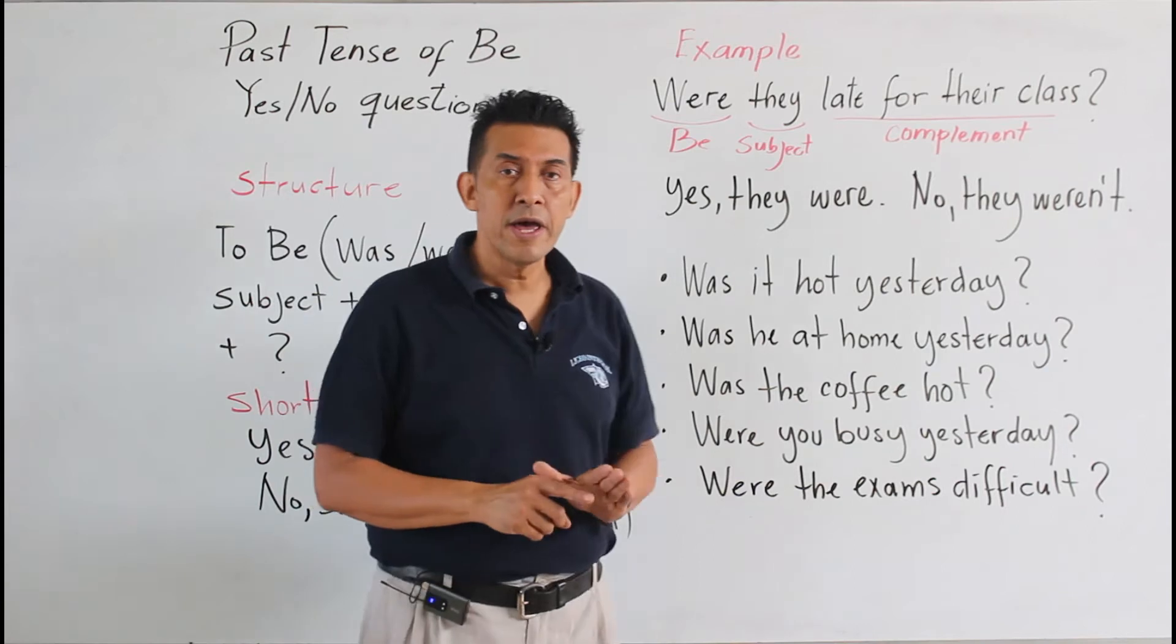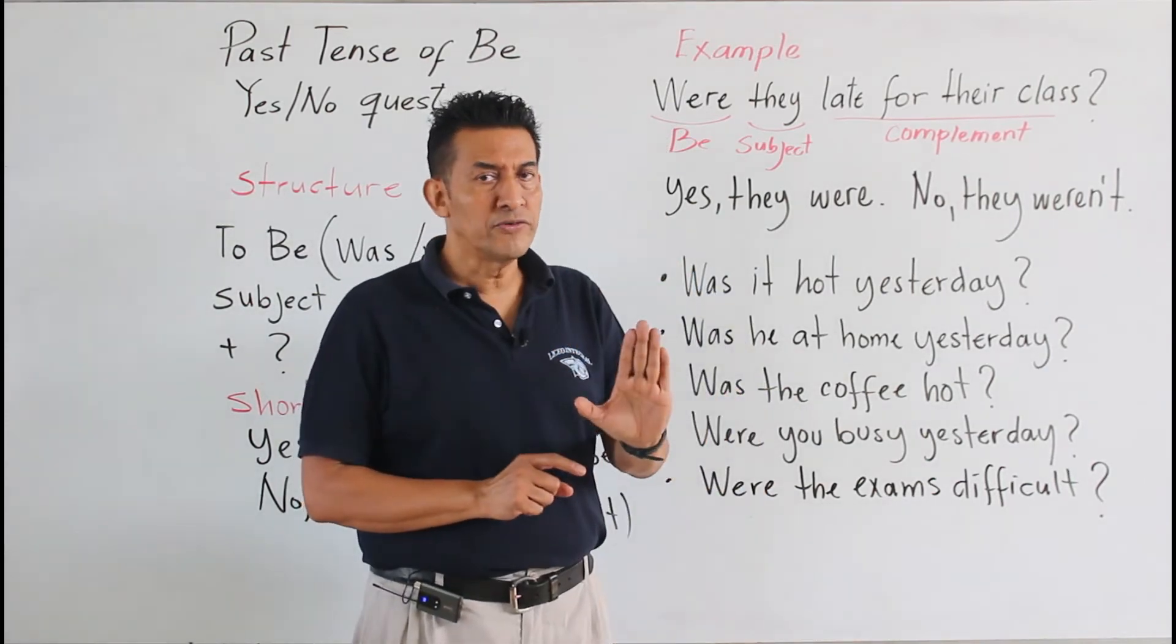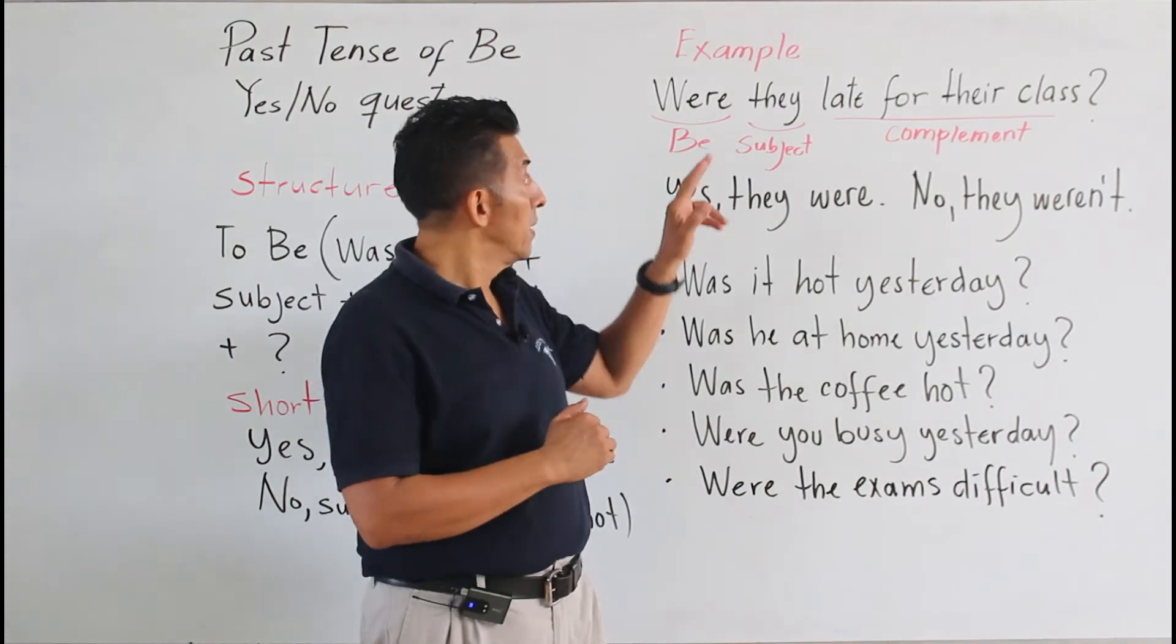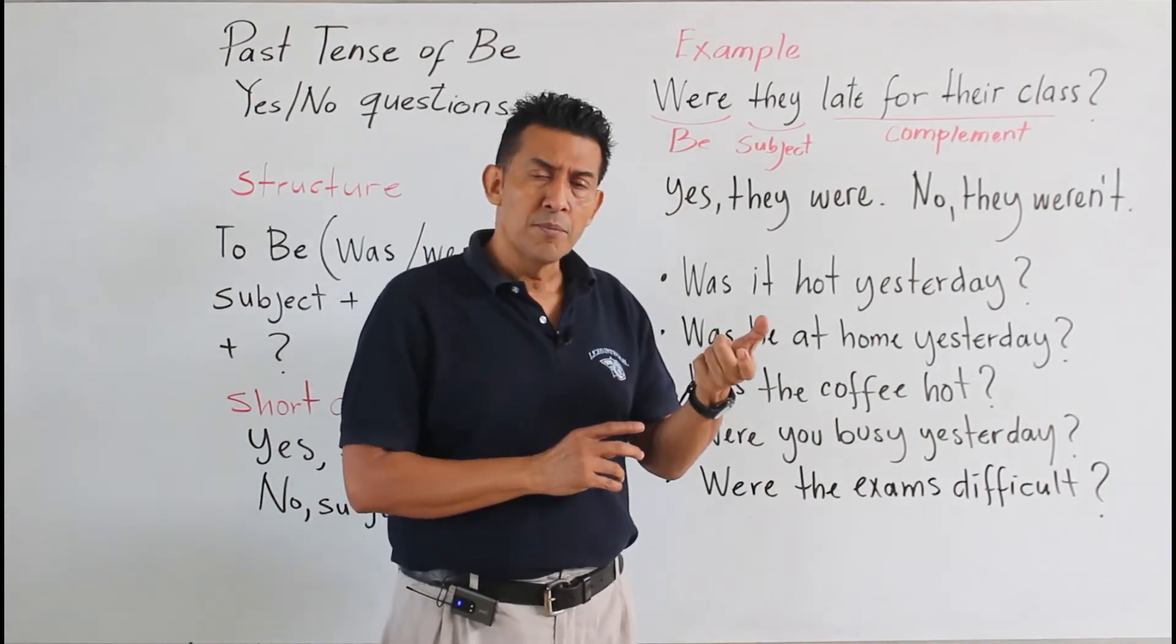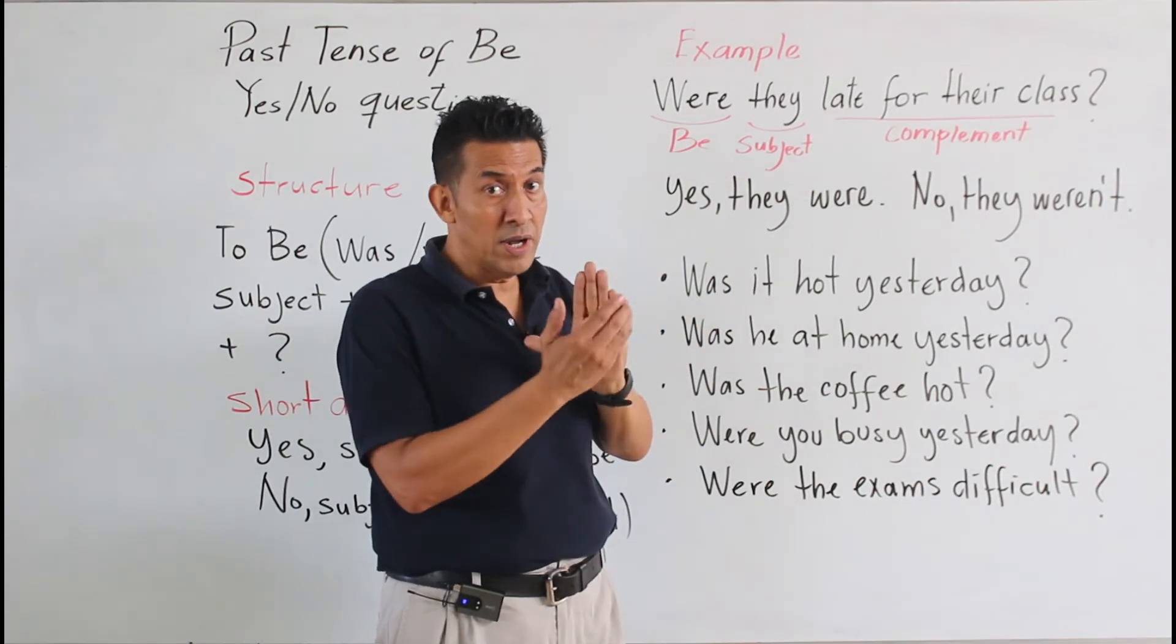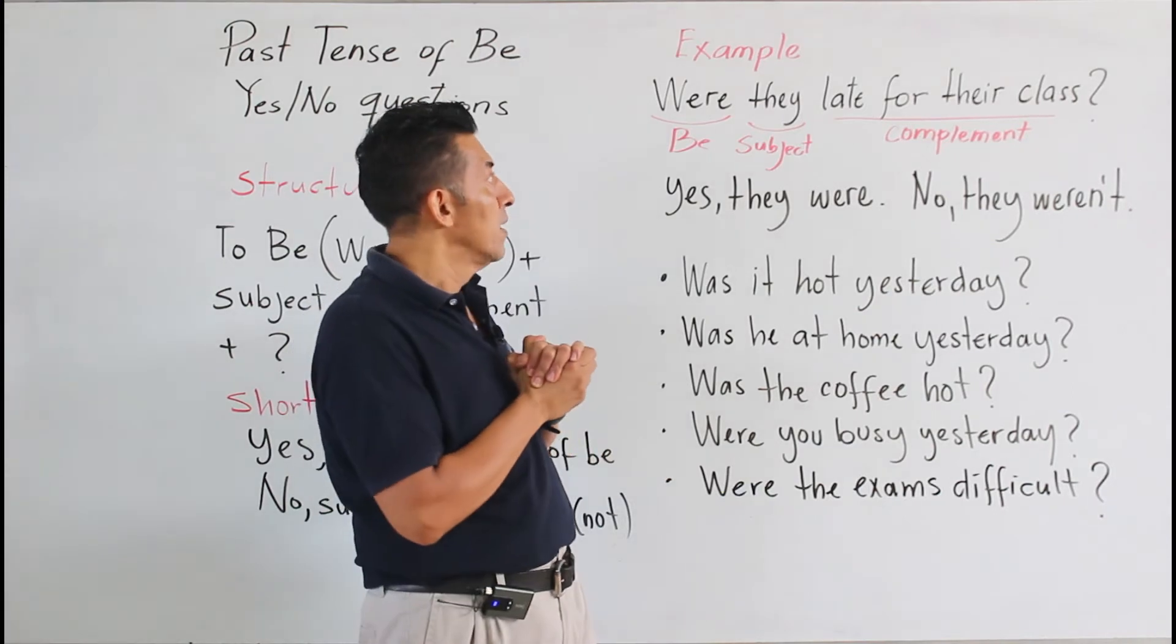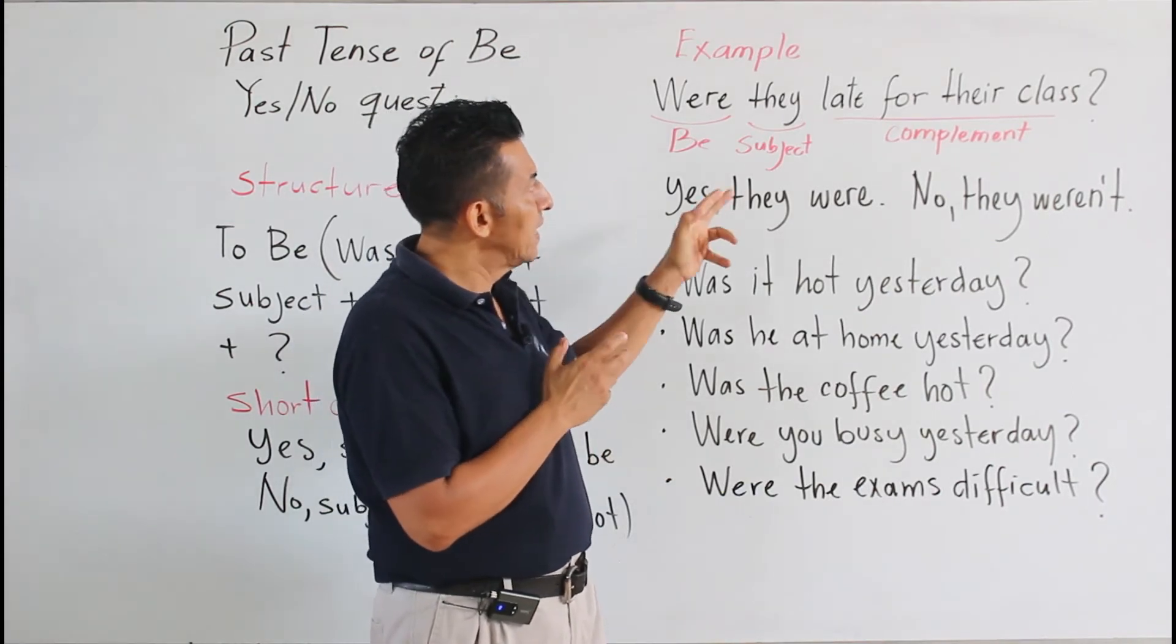Ahora tenemos el primer ejemplo, y como pueden notar, nosotros iniciamos con el verbo be. En este caso es were. ¿Por qué estamos utilizando were? Porque el sujeto es they. They es plural. Entonces en ese sentido es que nosotros la estructuramos de esa forma.